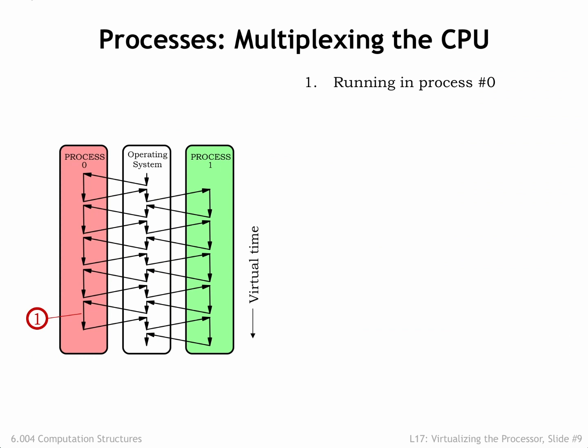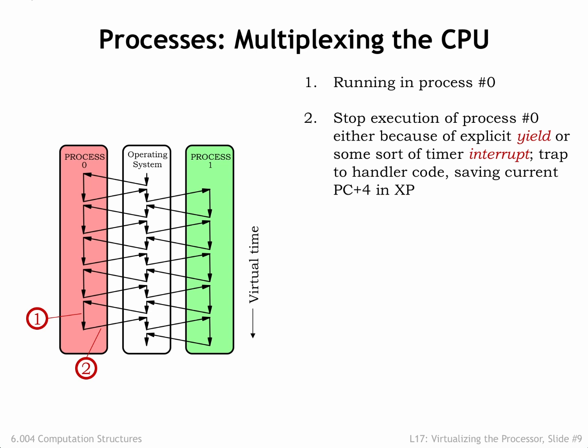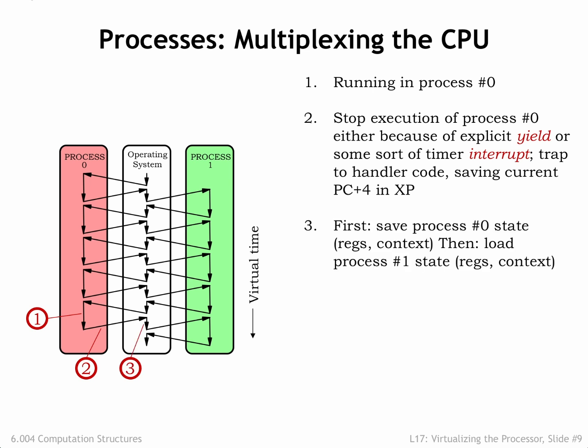Let's follow along as we switch from running process 0 to running process 1. Initially, the CPU is executing user-mode code in process 0. That execution is interrupted either by an explicit yield in the program or, more likely, by a timer interrupt. Either ends up transferring control to the OS code running in kernel mode while saving the current PC plus 4 value in the XP register.